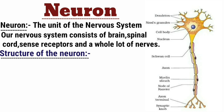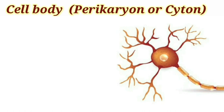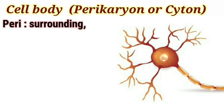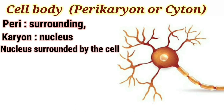Structure of the neuron — the three main parts of the neuron are the cell body, dendrites, and axon. The cell body is also known as Cyton or Perikaryon. If we break the word: 'Peri' means surrounding, and 'Karyon' is the word used for nucleus. The nucleus is surrounded by the cell, which is why it is called Perikaryon or Cyton.